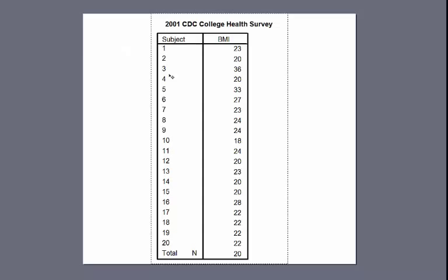In this column I have 20 subjects — N equals 20 — and here are their body mass index scores. The BMI is an indication of weight status: underweight, normal weight, overweight, or obese. Typically a BMI between 18.5 and 25 is normal weight; below 18 is underweight; 25 to 30 is overweight; and 30 to 35 is obese. For example, subject 1 is normal weight, subject 3 is obese, subject 16 is overweight, and subjects 17 through 20 are in the normal weight range.